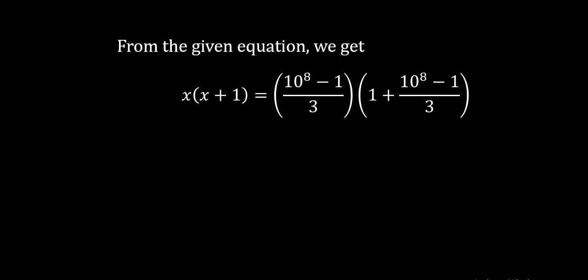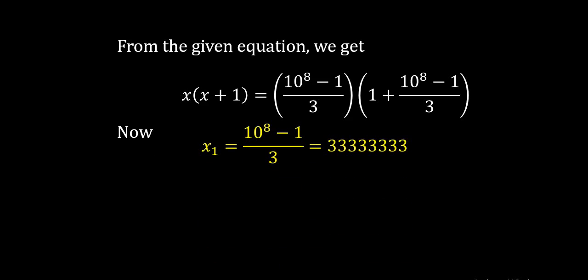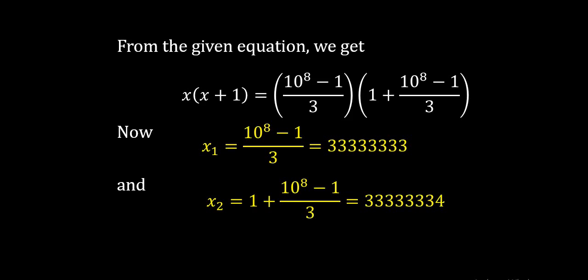From here we can write x(x plus 1) equal to ((10⁸ minus 1)/3) times (1 plus (10⁸ minus 1)/3). The value of (10⁸ minus 1)/3 is 33333333, and the value of 1 plus (10⁸ minus 1)/3 is 33333334 — the last digit 3 changes to 4. These are the values of the terms within the brackets.